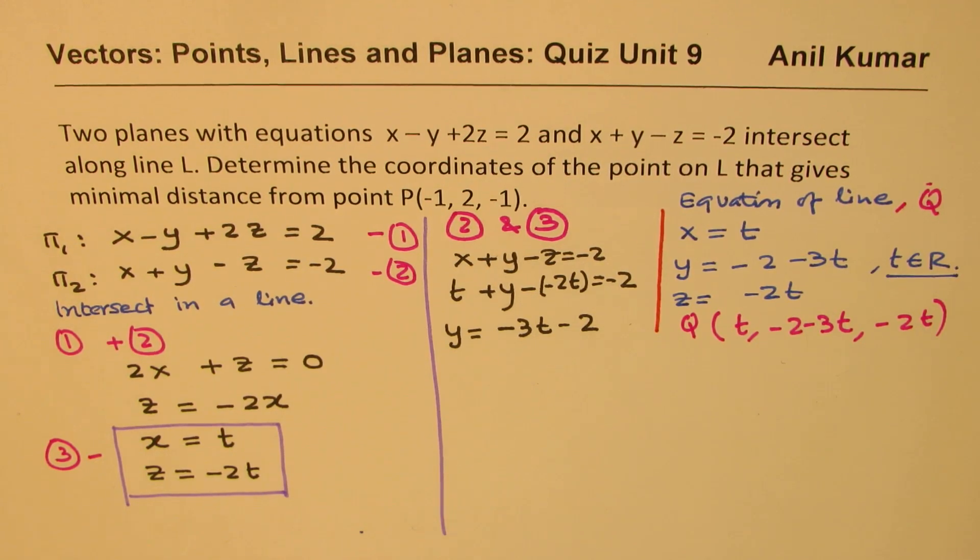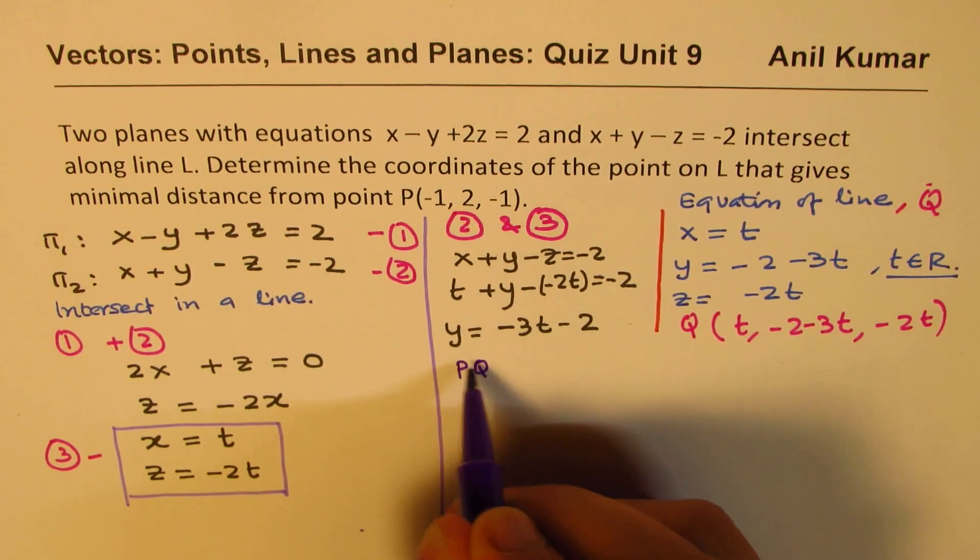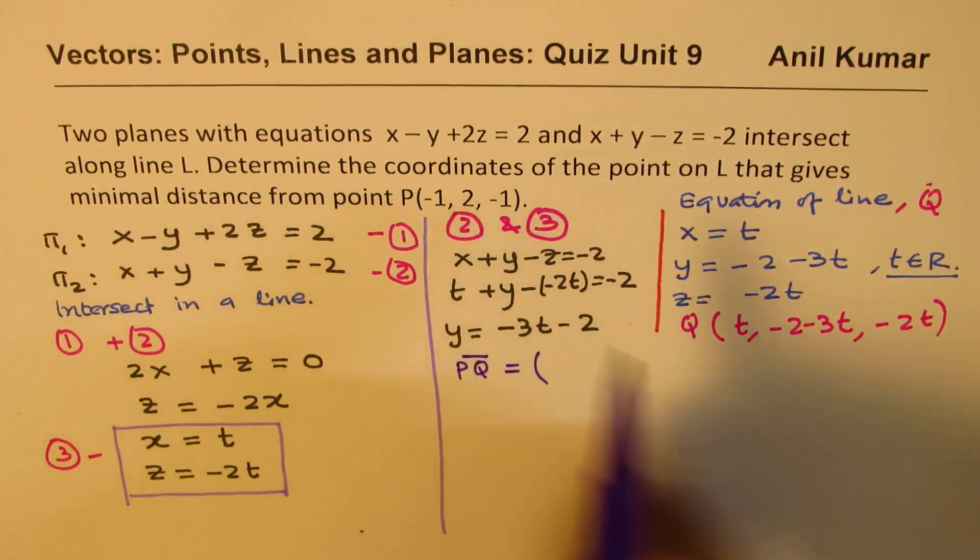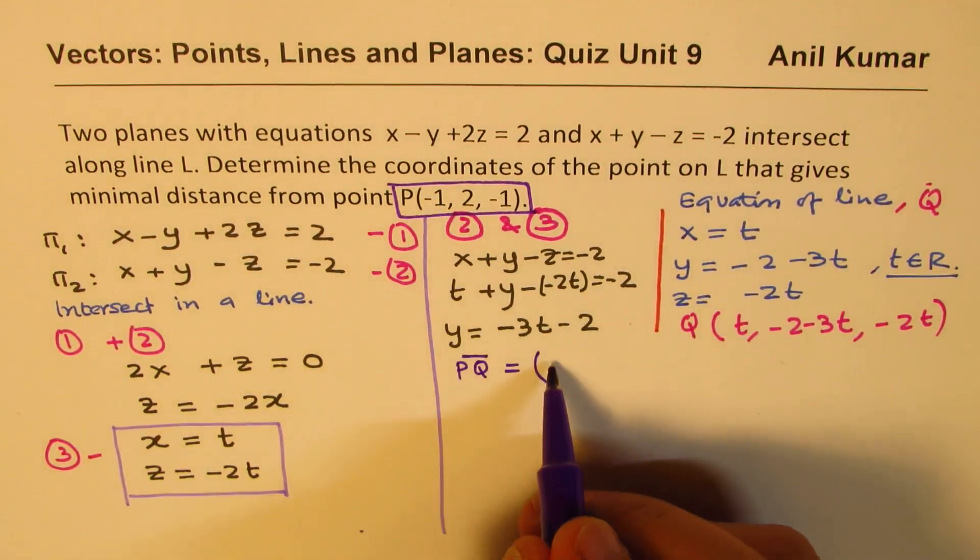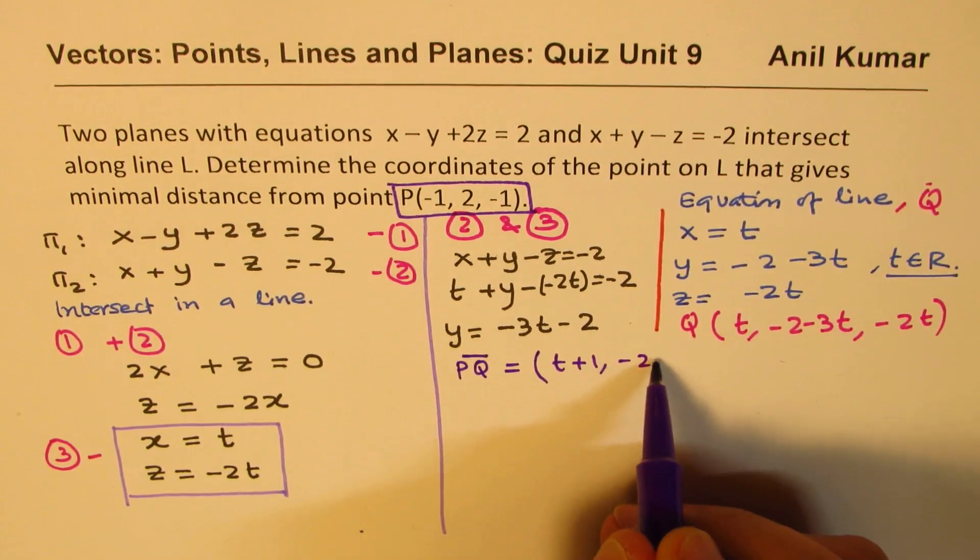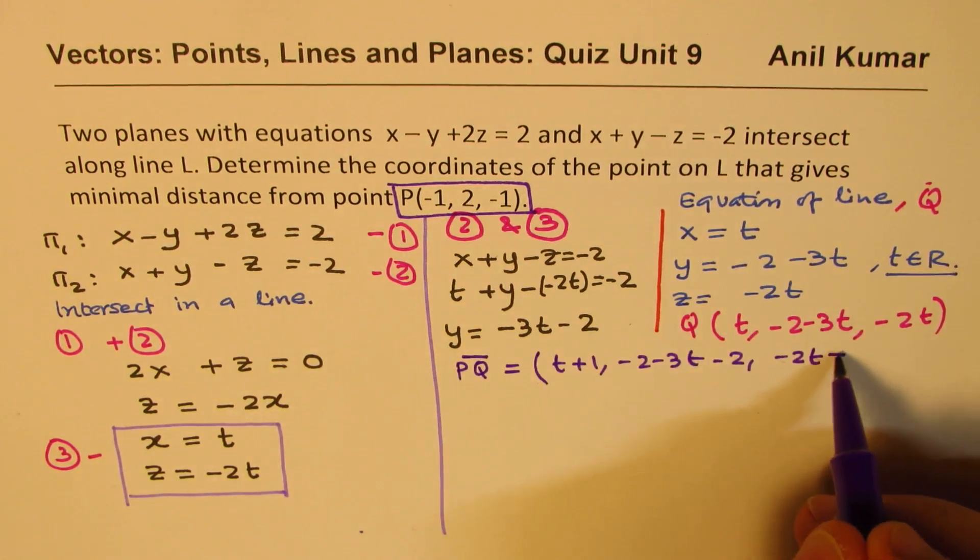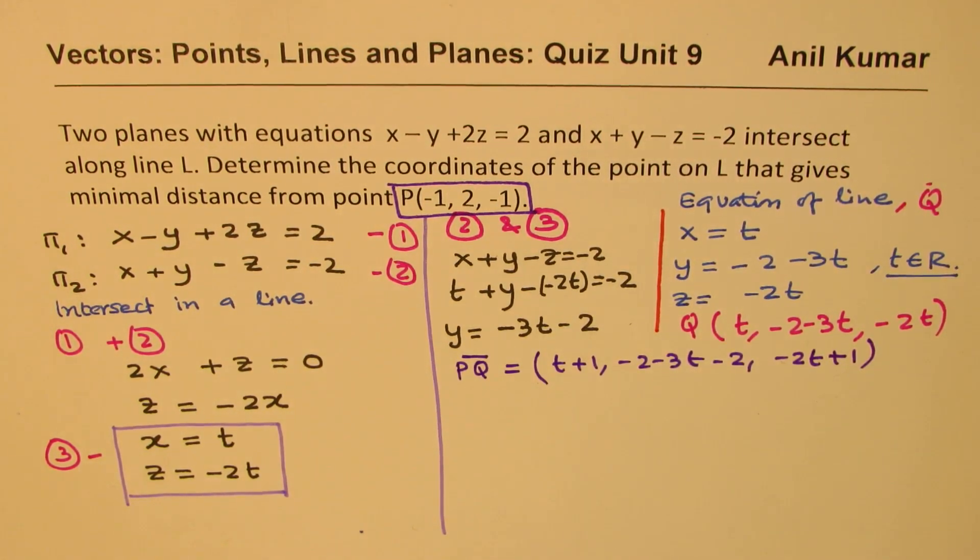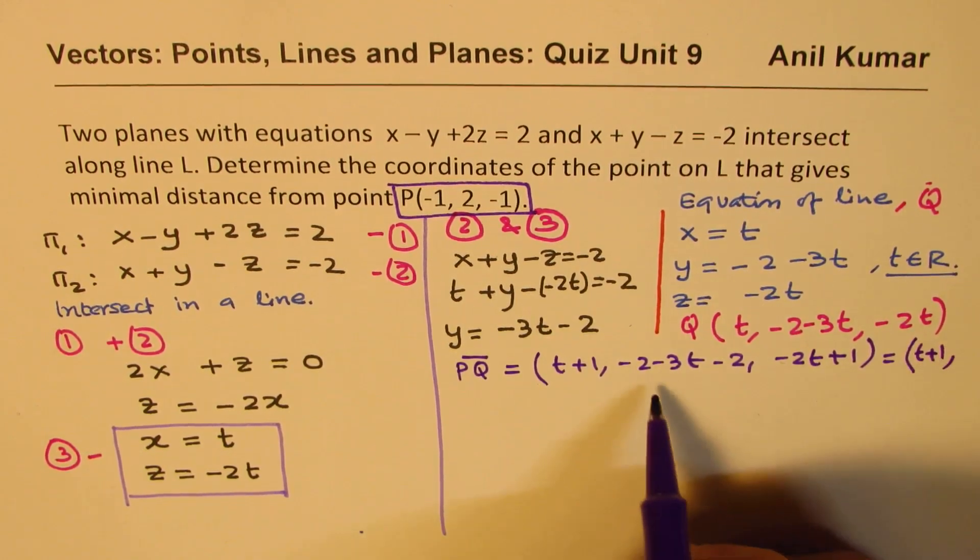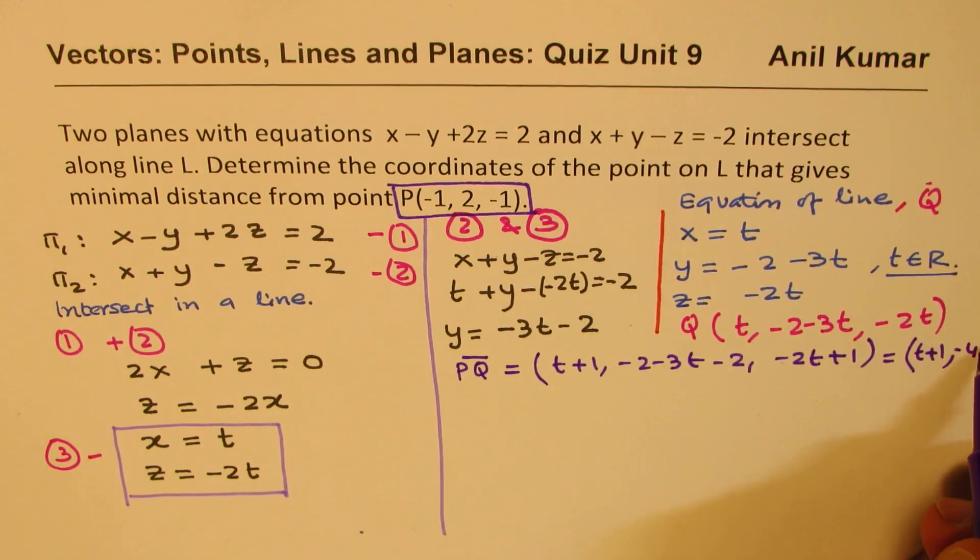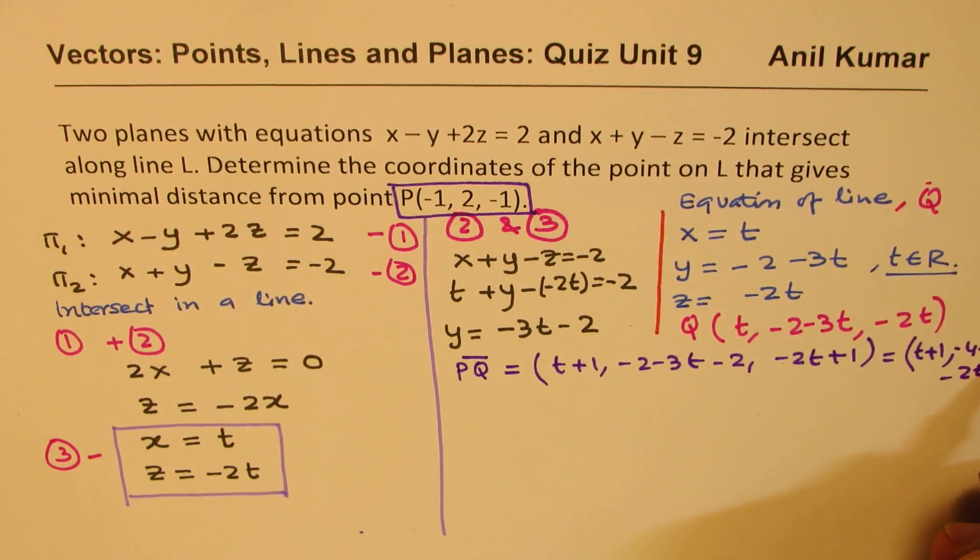Let's find PQ. P is given as (1, 2, -1). So PQ will be: t minus 1 becomes t plus 1, minus 2 minus 3t minus 2, and minus 2t minus (-1) becomes minus 2t plus 1. We could simplify this as t plus 1, minus 4 minus 3t, and minus 2t plus 1.